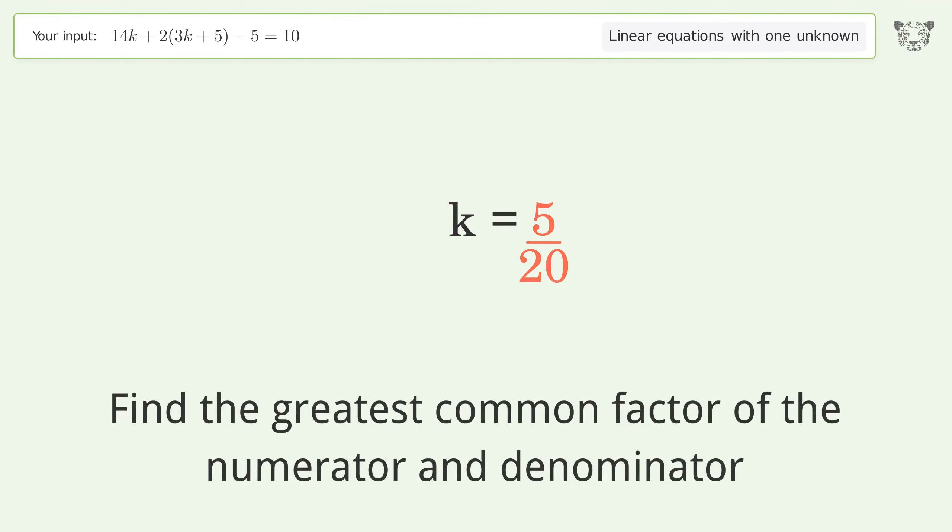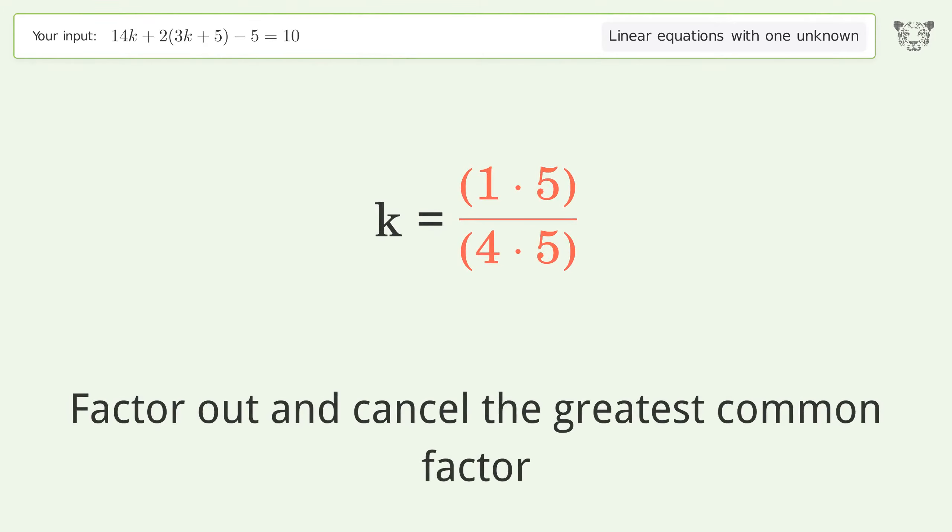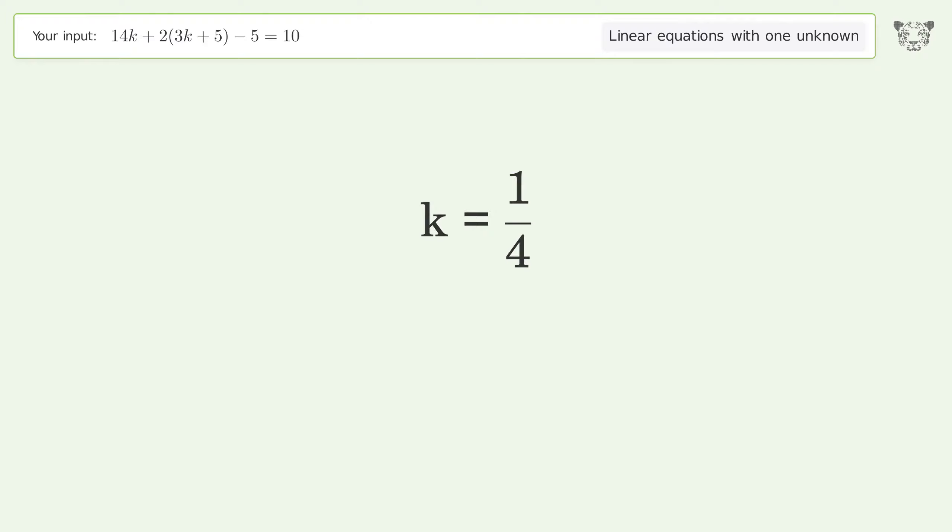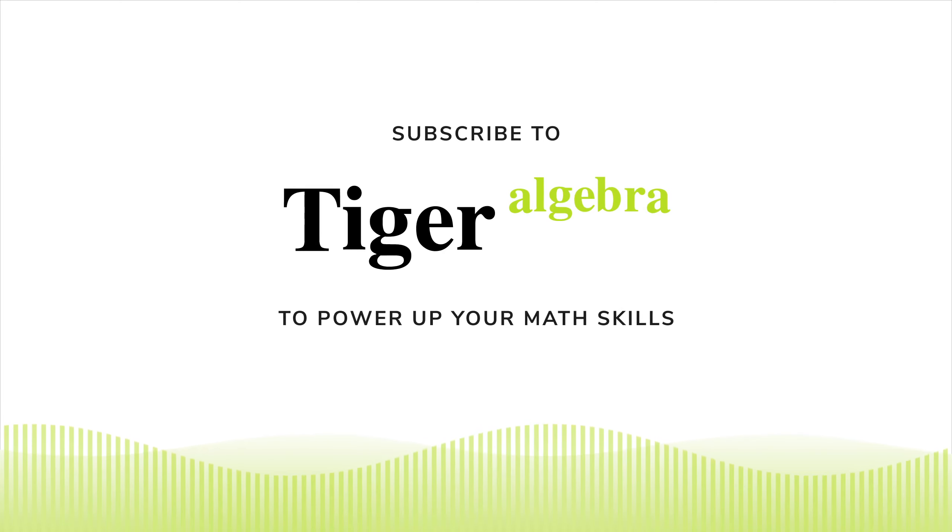Find the greatest common factor of the numerator and denominator. Factor out and cancel the greatest common factor. And so the final result is k equals 1 over 4.